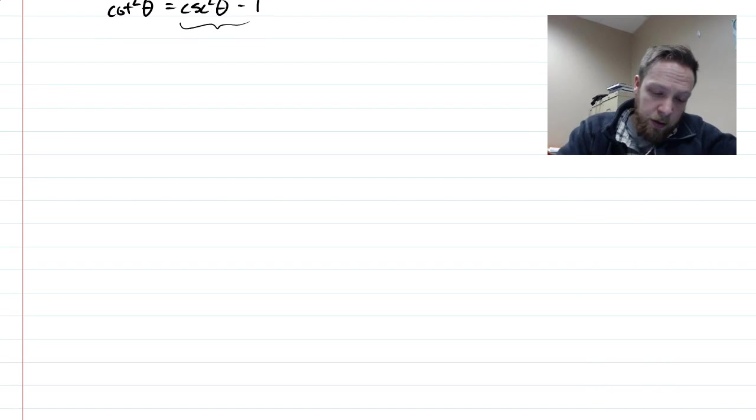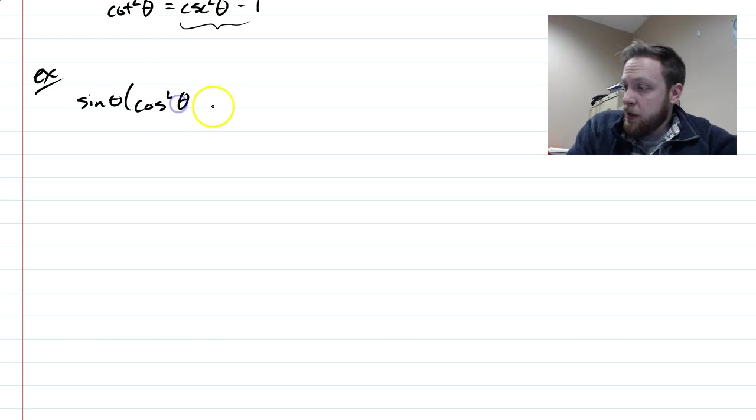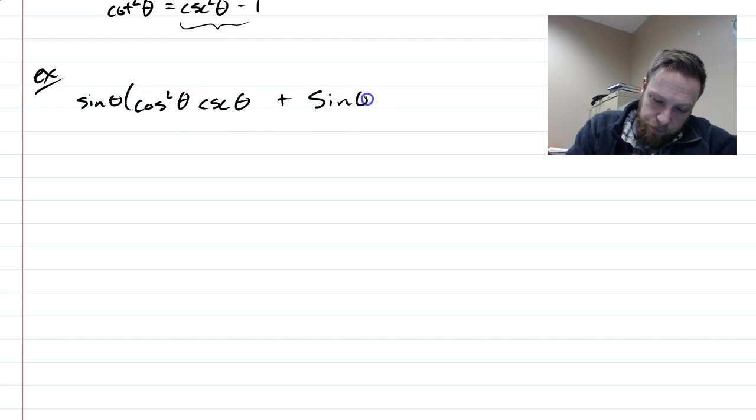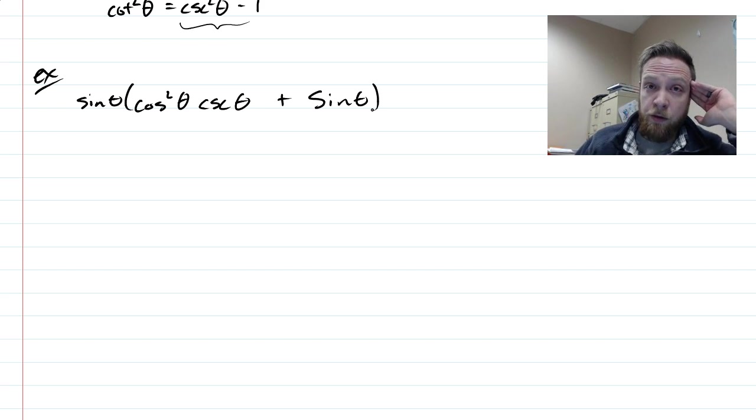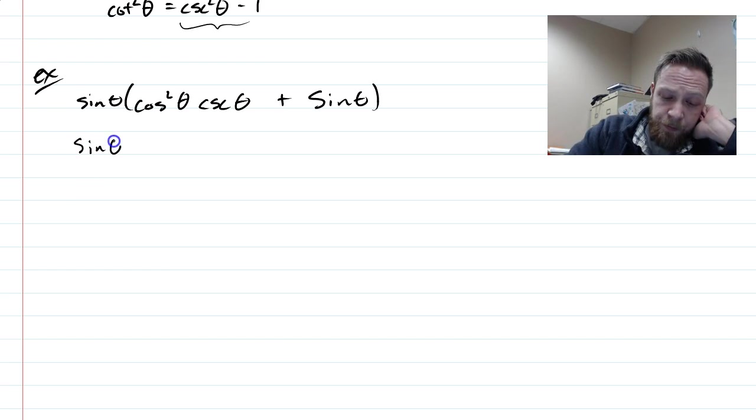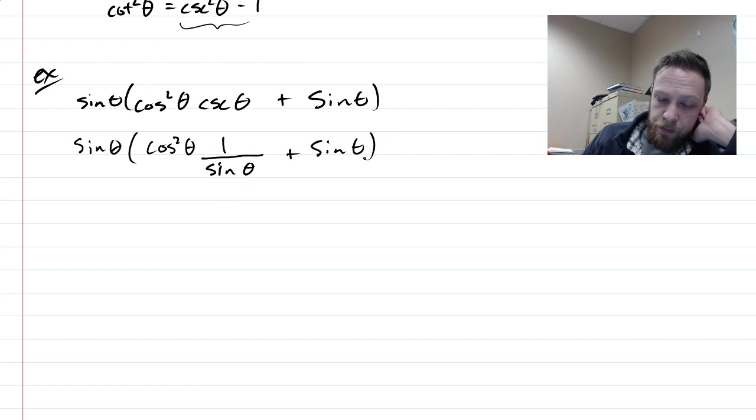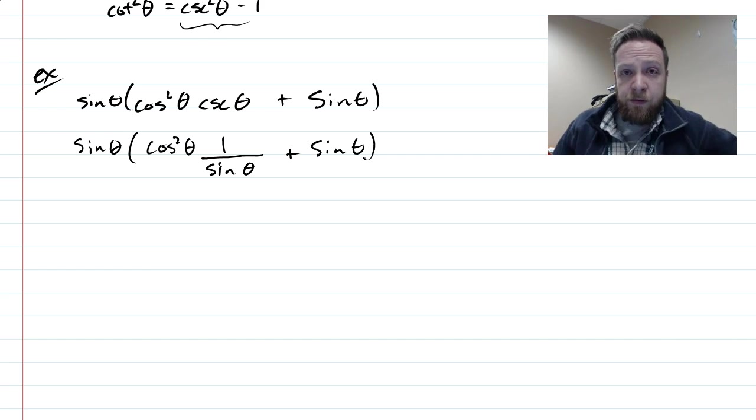So one last example here that may use the new versions. You have sin θ times (cos² θ csc θ + sin θ). We have a lot going on here. First strategy you can always do is write everything in terms of sine and cosine. So if I was to rewrite this, I would have sin θ times (cos² θ times 1 over sin θ + sin θ).